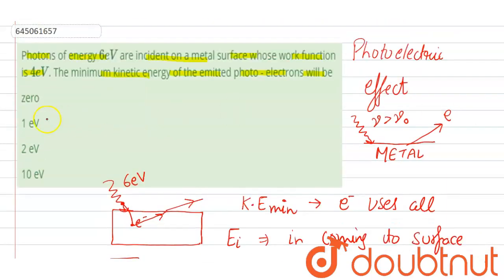So the minimum kinetic energy equals 6 minus 4, which is 0 electron volts. The correct answer to this question is 0, option 1. Thank you.